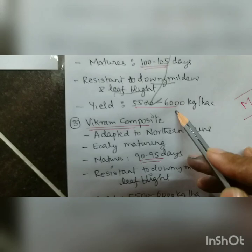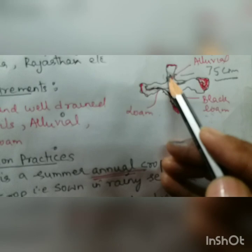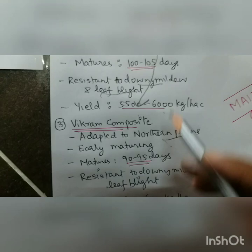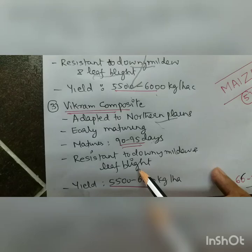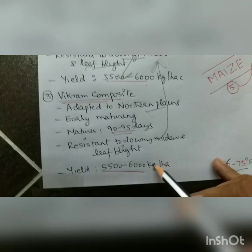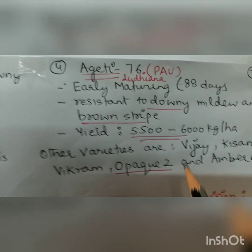Vikram Composite is suited to the northern plains. It matures earlier than Juhar Composite at 90 to 95 days. It is resistant to the same diseases — downy mildew and leaf blight — and yield is 55 to 6000 kg per hectare.